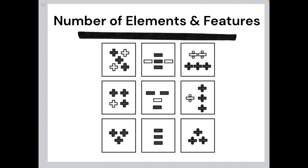Sometimes the underlying logic can govern how many shapes or features are present in each element. Common examples include changes in the number of edges of any given shape, the number of curved versus straight lines, the number of shapes within or outside of other shapes, and the number of lines.